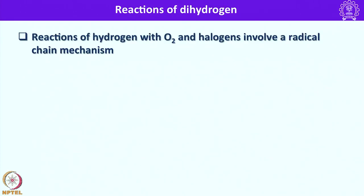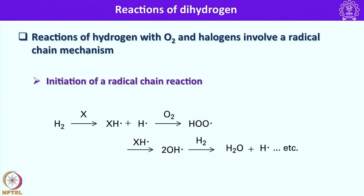Reaction of hydrogen with oxygen and halogens also involve radical chain mechanism. We have to remember three steps: initiation of a radical chain reaction where H2 when treated with halide generates two radicals. These radicals in presence of oxygen molecules form HOO dot, and this HOO dot reacts to form hydroxyl ions. The hydroxyl ions combine with H2 molecule and this radical chain reaction continues.